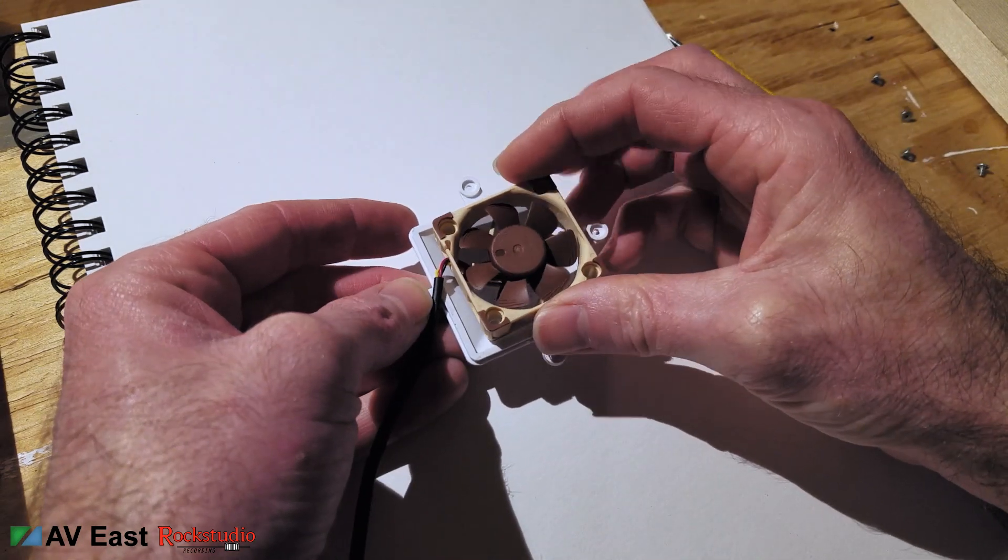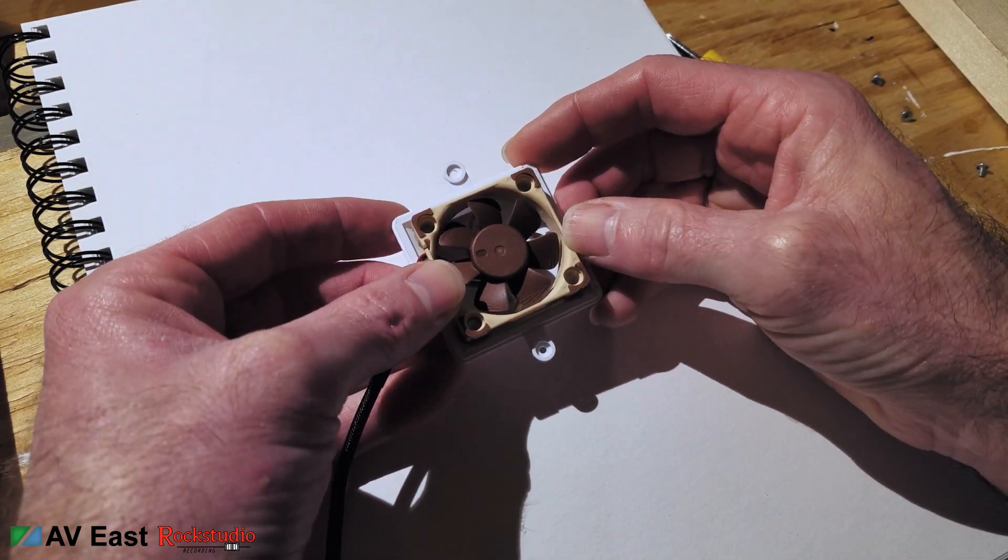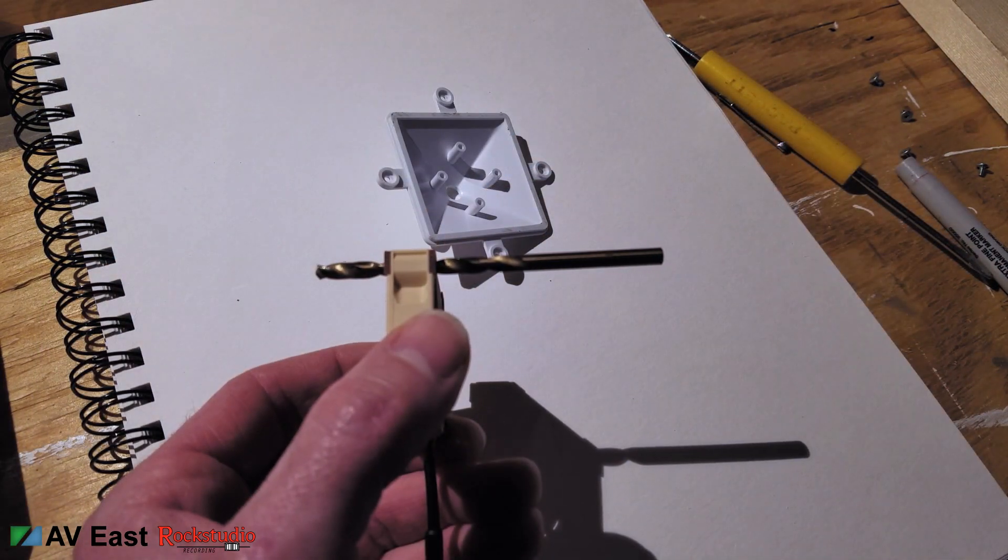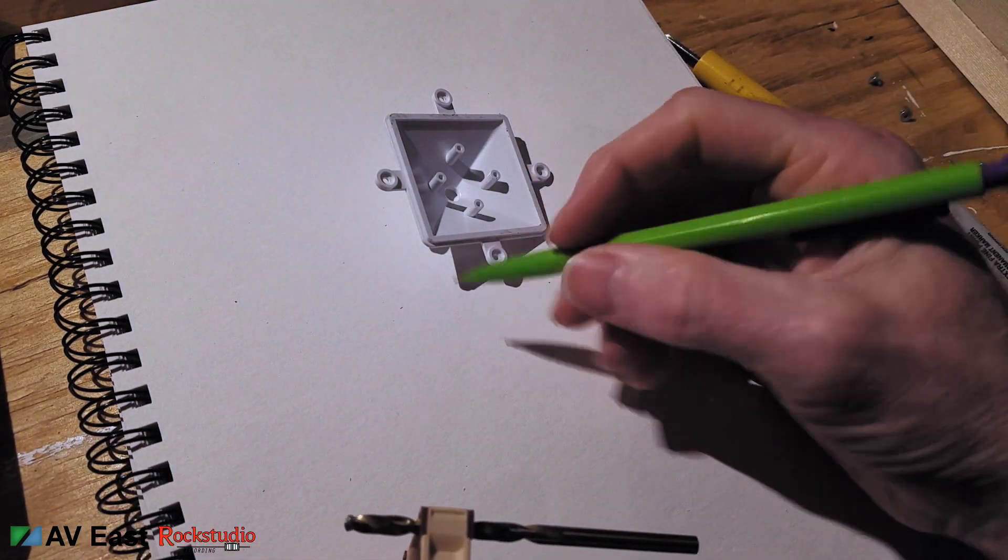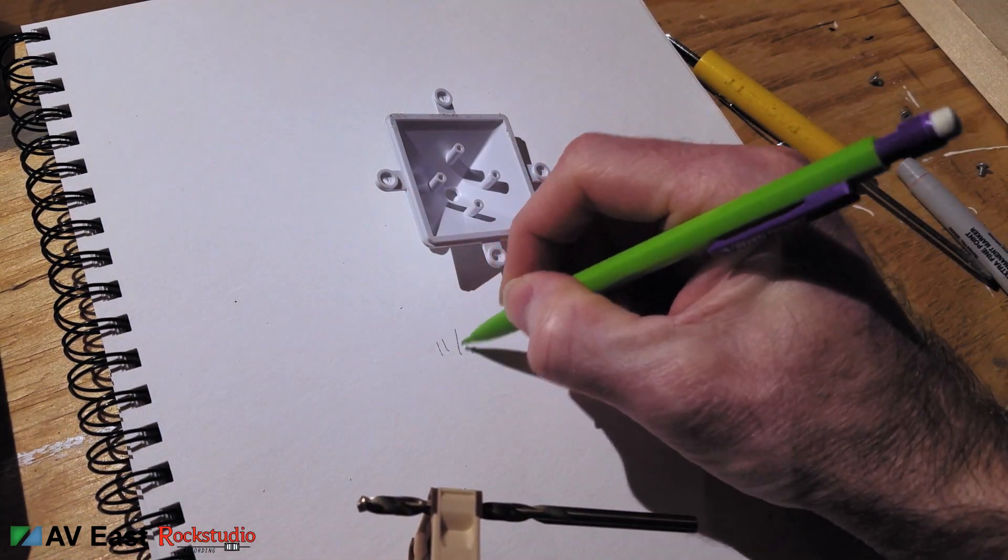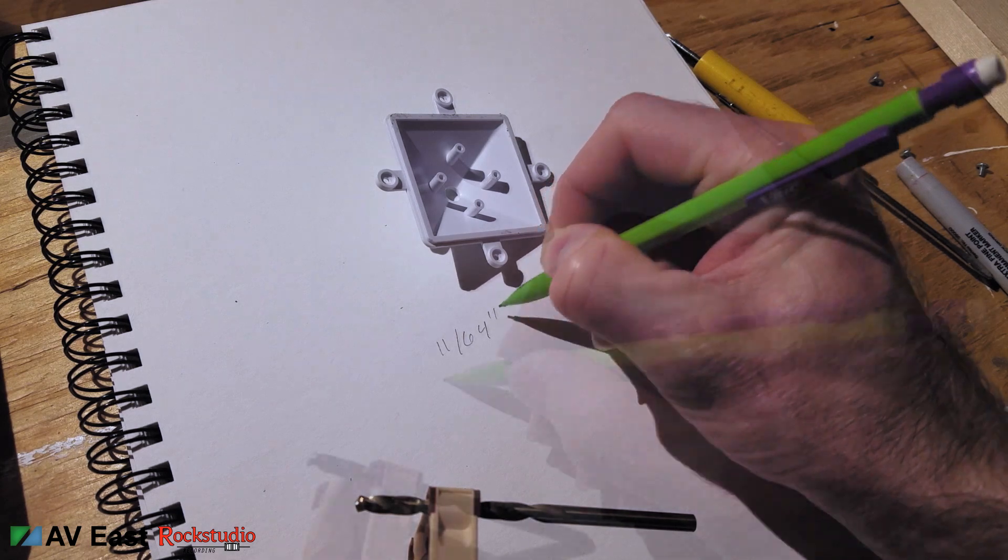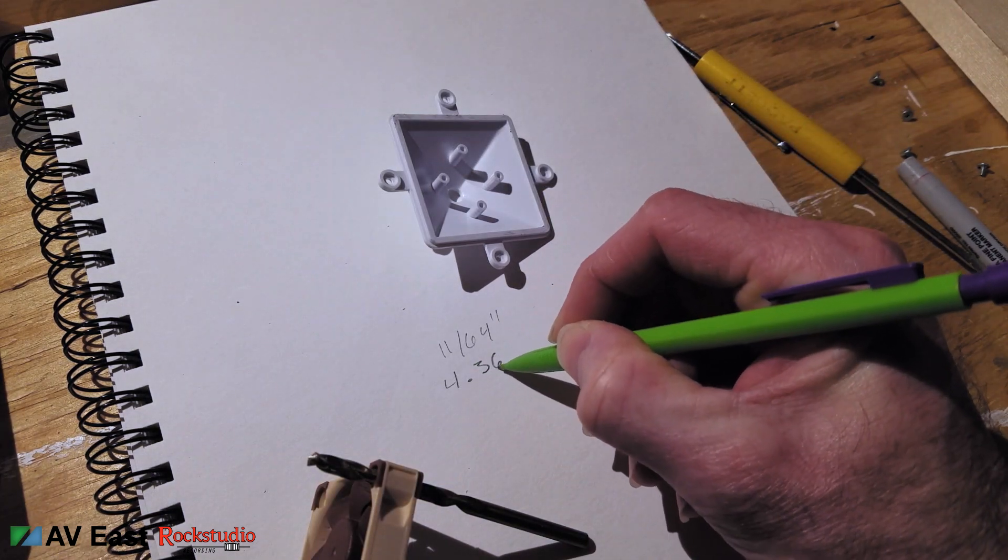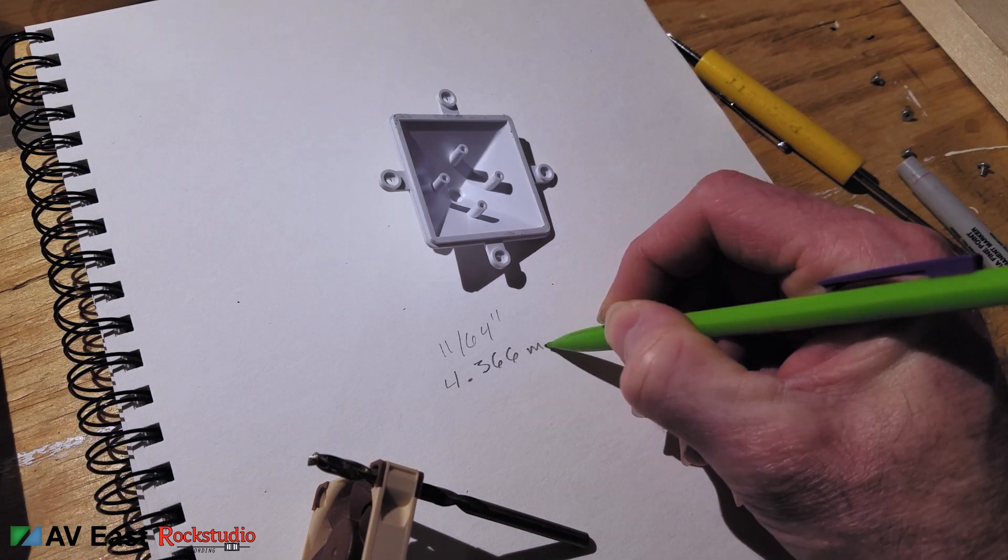This is how we're gonna place the fan over the Great Pyramid. Now you're gonna want to find a drill bit that fits the standard screw hole size for the fan. I've determined that the hole in the fan which is a little bit smaller than the screw is 11/64 or 4.366 millimeters.